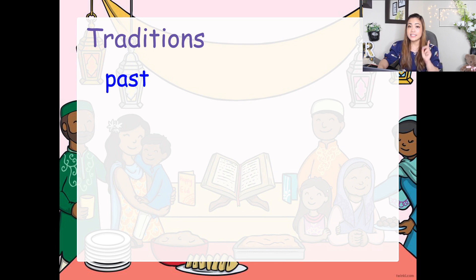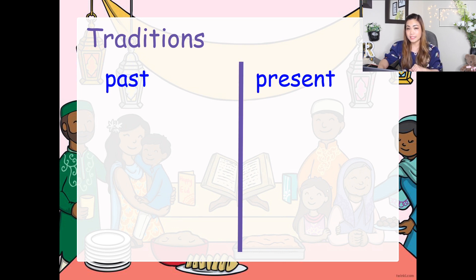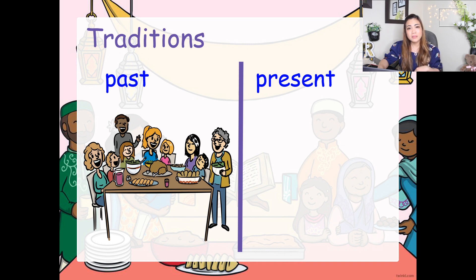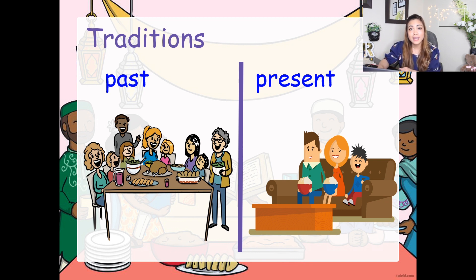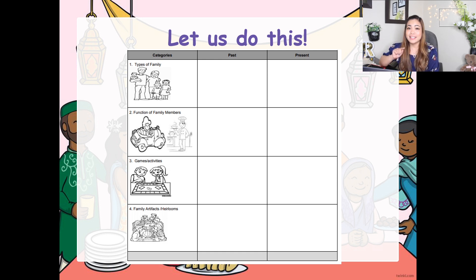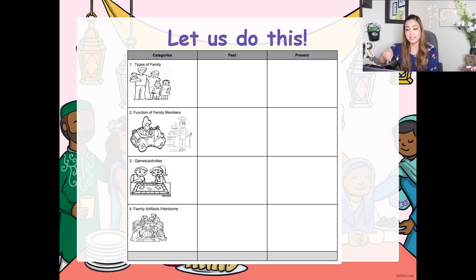Traditions in the past and in the present time. So in the past, maybe some people really made sure to gather all together and have dinner. But in the present time, maybe being together or having a movie time together will also be the best thing to spend quality time with each other. This formative chart will allow you to compare those categories in the past and in the present time, just like what I've shown you.